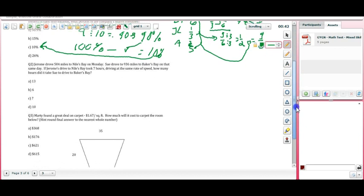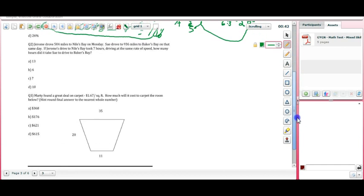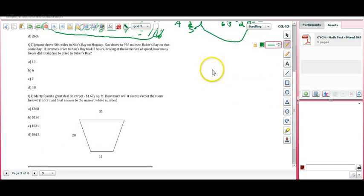Now let us go to question number two. Jerome drove 504 miles to Niles Bay on Monday. Sue drove 936 miles to Bakers Bay on that same day. If Jerome's drive to Niles Bay took seven hours, driving at the same rate of speed, how many hours did it take Sue to drive to Bakers Bay?